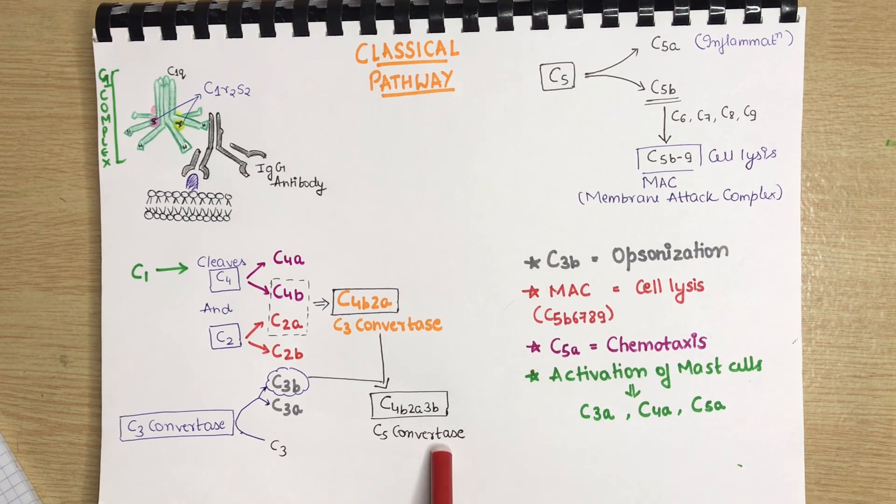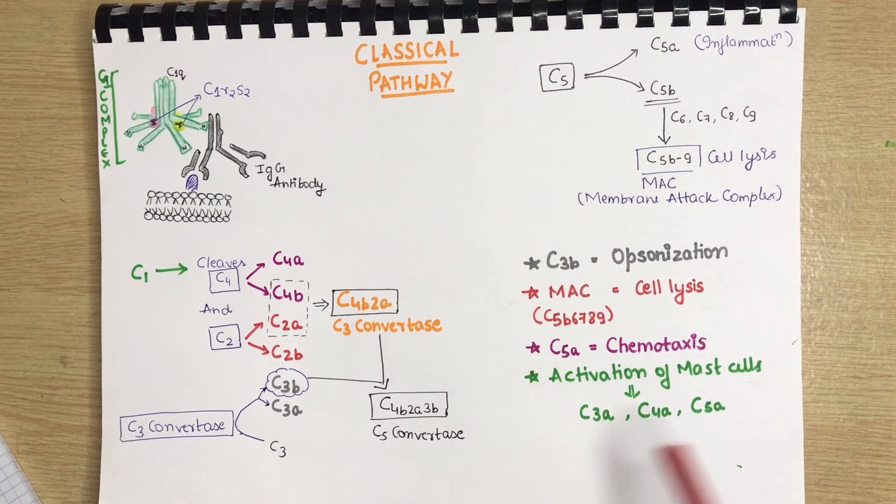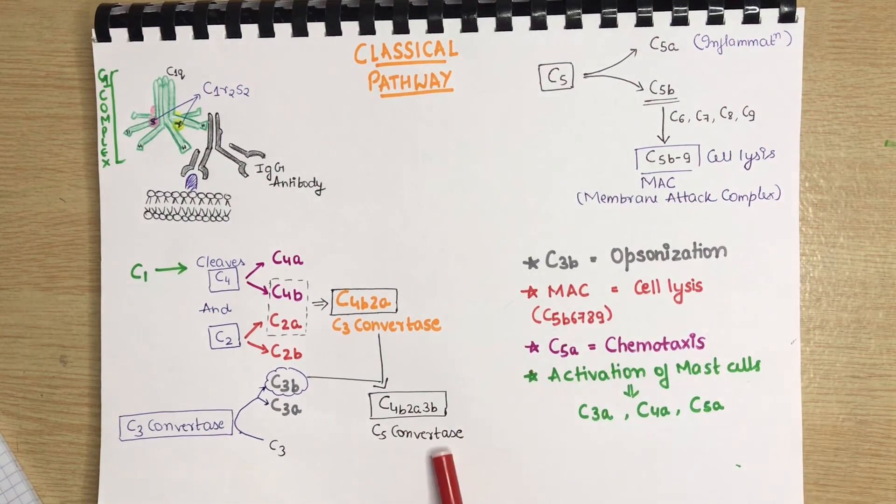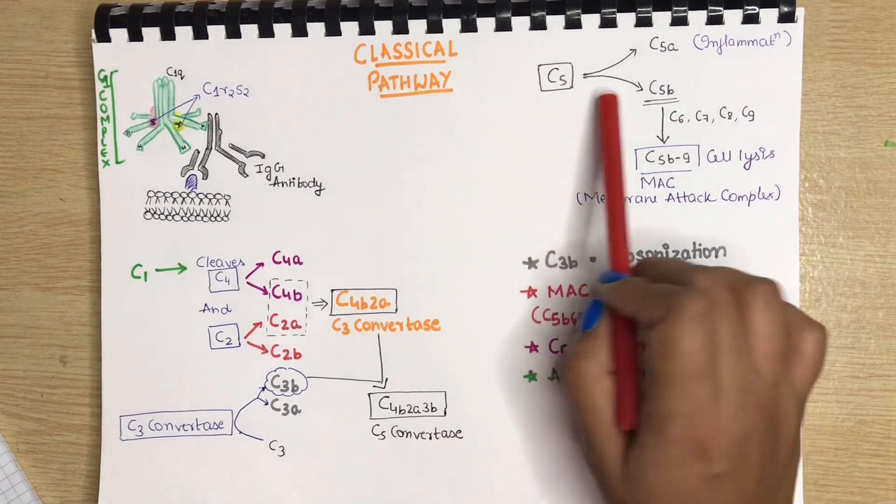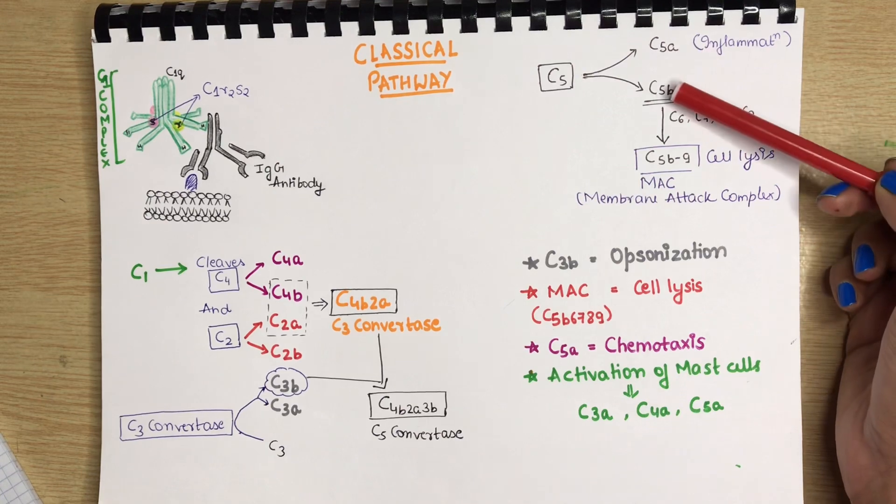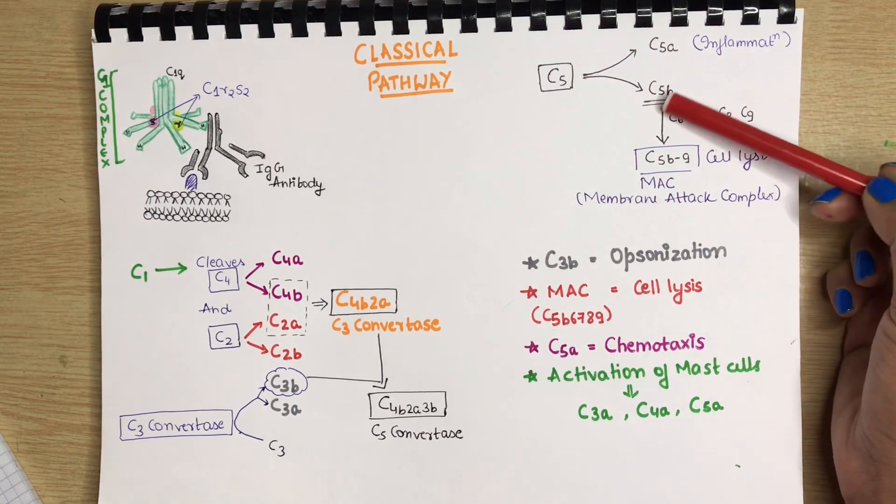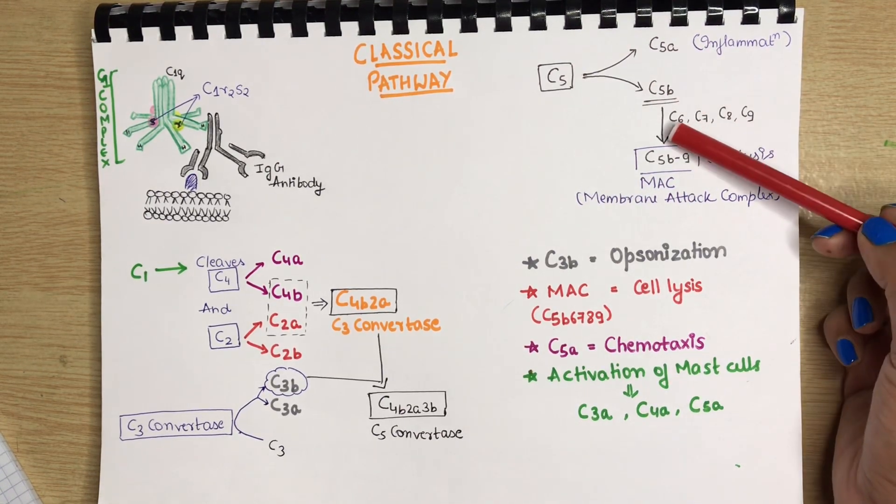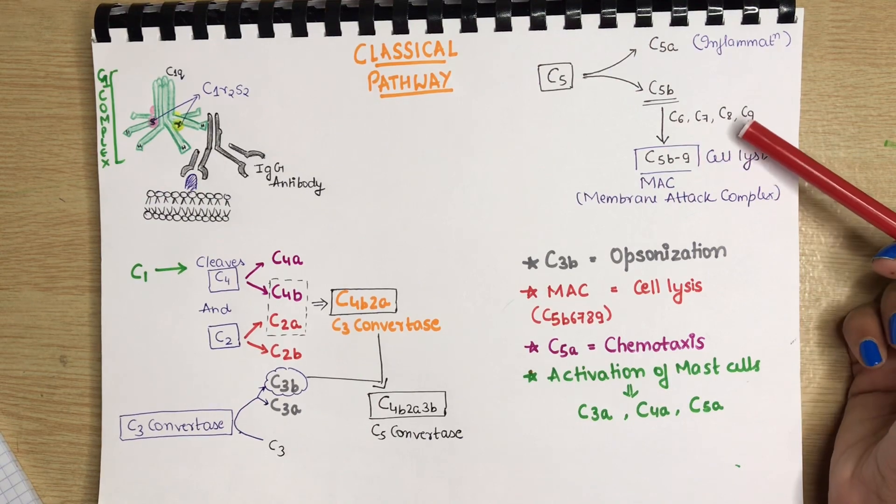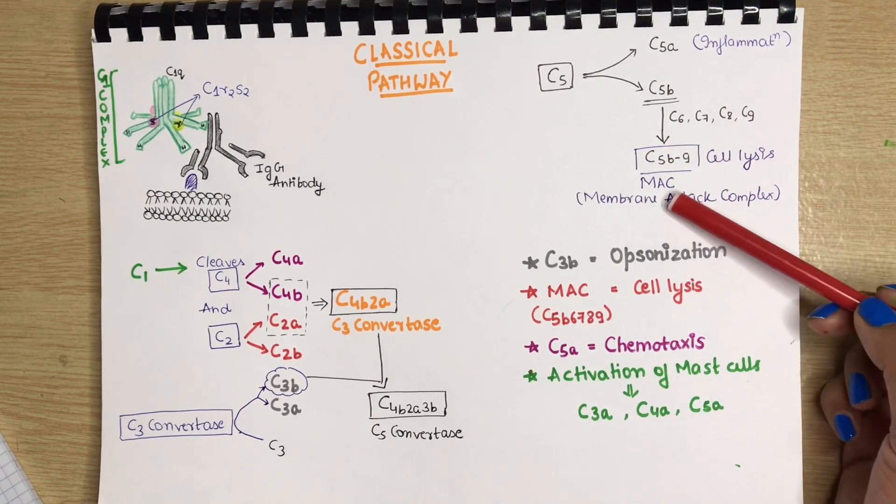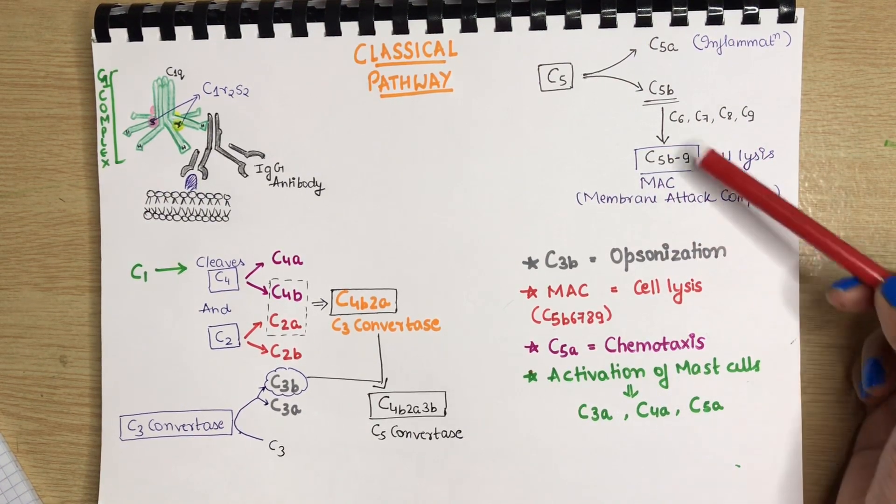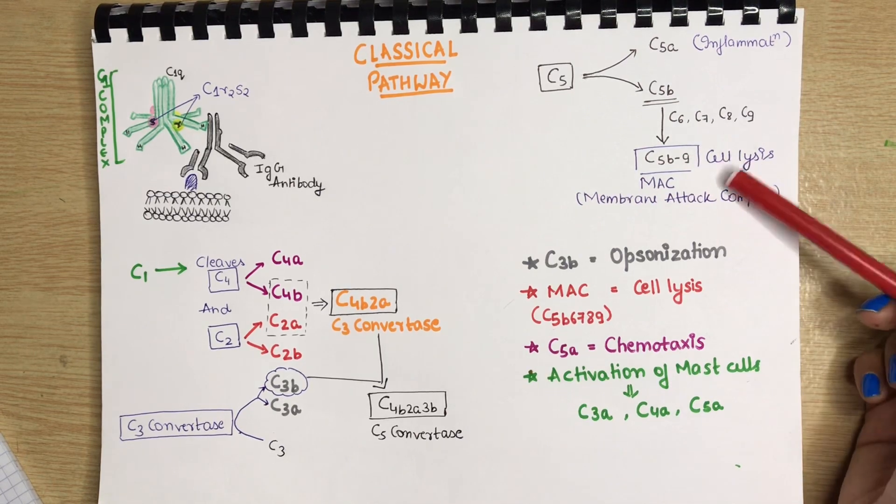As the name suggests, this will be cleaving the C5 complement protein. Now, in presence of C5 convertase, C5 will be cleaved into C5A and C5B. Now, this C5B will combine to C6, C7, C8 and C9 hence forming the MAC which is membrane attack complex which is basically responsible for the cell lysis.